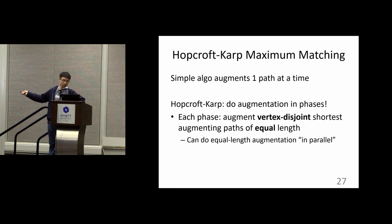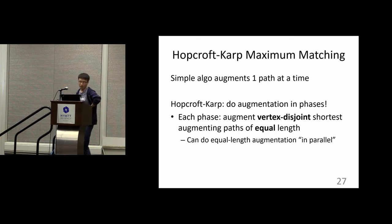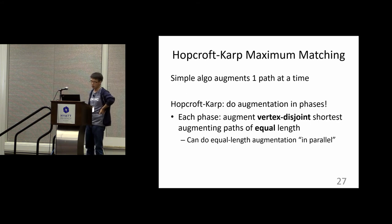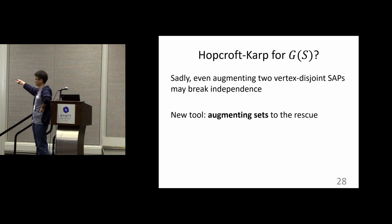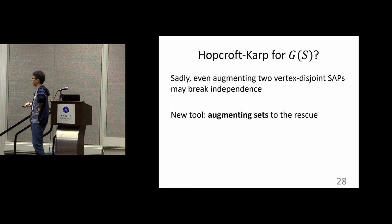Recalling Hopcroft-Karp: the simple algorithm augments one path at a time. We said you can't just parallelize augmentations for matroids because you might not preserve independence. In fact there is an explicit example showing that even two such paths together may not preserve independence. So we need something new, and we propose the concept of augmenting sets.